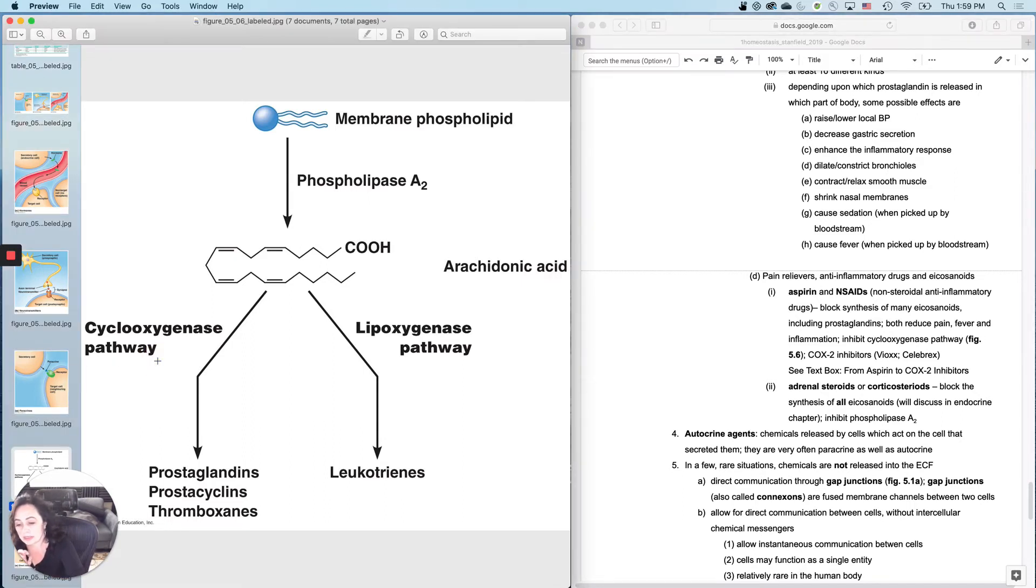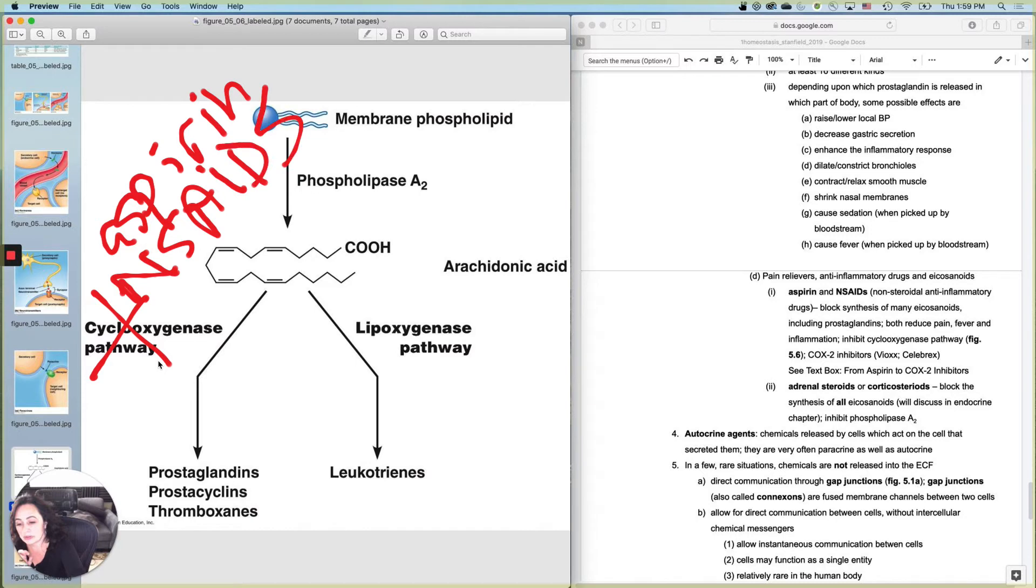Here's what these do. Aspirin and non-steroidal anti-inflammatory drugs like ibuprofen and naproxen sodium, those block the synthesis of many of these eicosanoids, including the prostaglandins, because what they do is they actually inhibit the cyclooxygenase pathway right here. Aspirin and NSAIDs, NSAIDs means non-steroidal anti-inflammatory drugs. What those do is block the cyclooxygenase pathway. And because prostaglandins are involved in the inflammatory response and can lead to fever and can lead to pain, so they reduce pain, fever, and inflammation. That's part of the reason that we actually take them, because they block the pathway of paracrine agents that leads to fever, inflammation, and also pain.